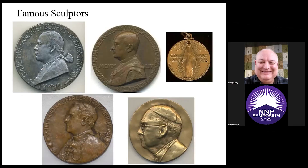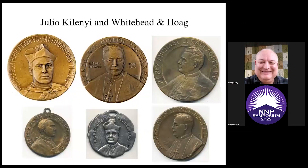On the bottom row, we have examples by Laura Garden, before she married Mr. Frazier, and a sculpt based on a drawing. Whitehead and Hogue was certainly well positioned with badges and pinbacks, and once they moved into making medals, Julio Caleni seems to have been their go-to bishop portrait sculptor. Here are six examples, all by him.